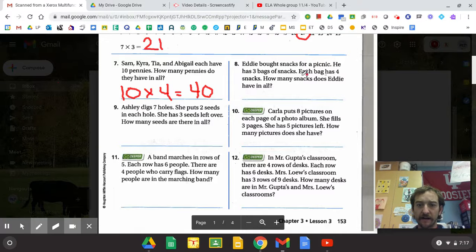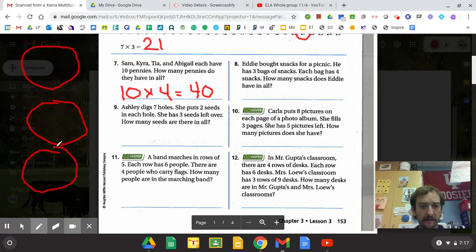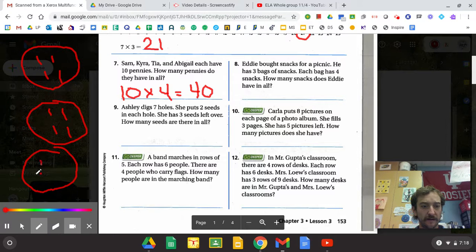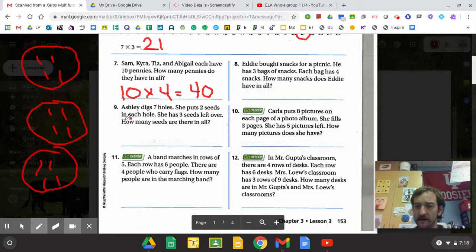Let's go over here, Eddie. Eddie bought snacks for a picnic. He has three bags of snacks. So let's draw a picture for this one. Bag of snacks. Bag of snacks. Bag of snacks. There's my three bags of snacks. Each bag has four snacks in it. So I'm going to go evenly give them out. Each bag has the same number. They're equal groups. So the main thing we're doing here is equal groups. So I have three groups of four.